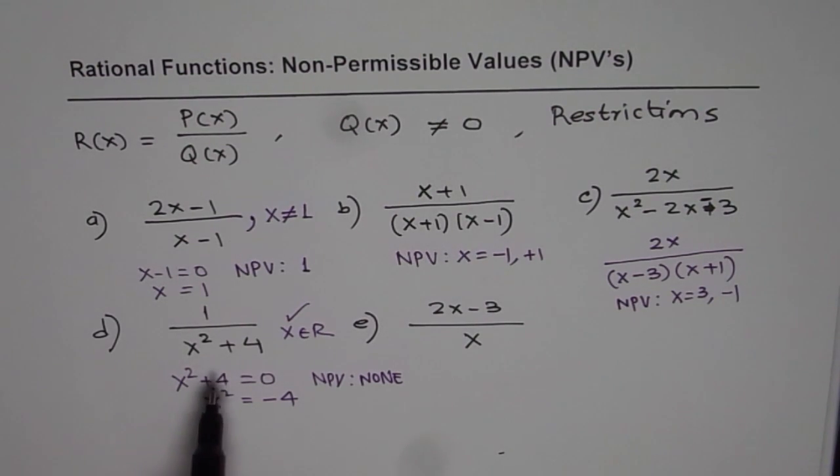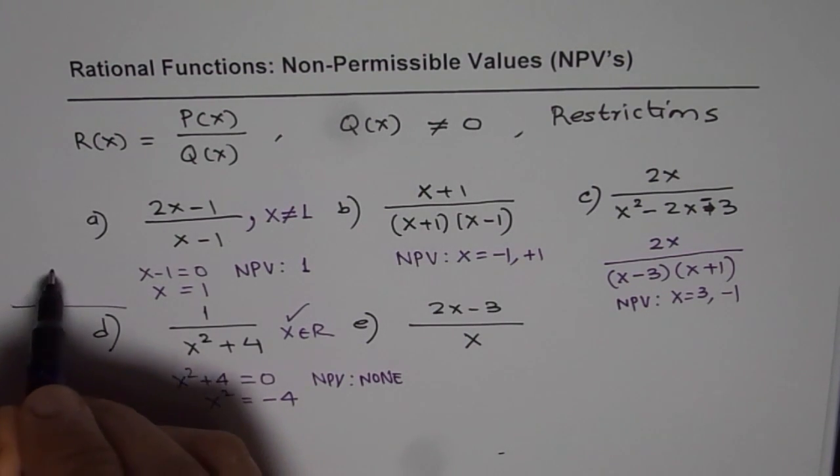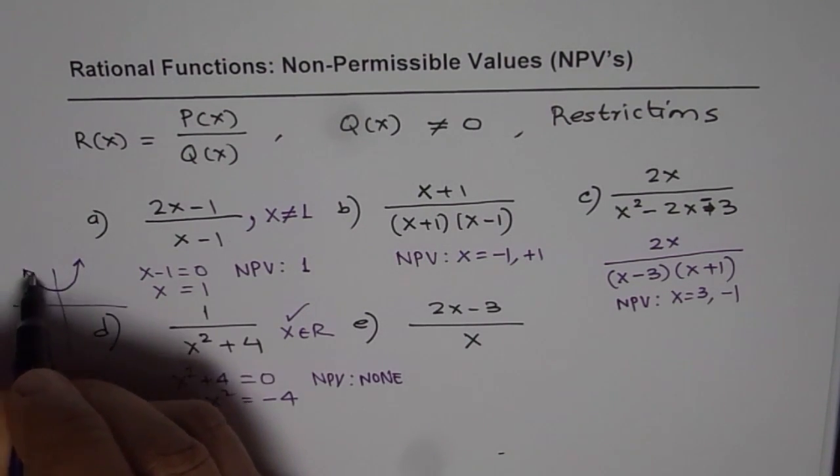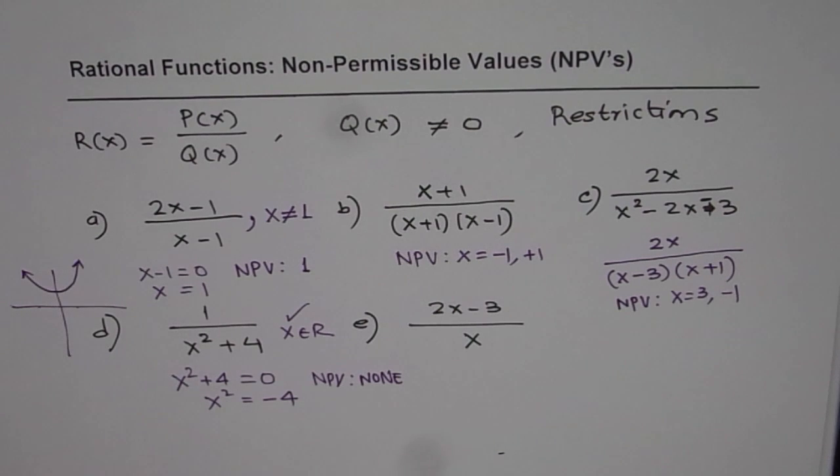That is important. You will note later that if I sketch x squared plus 4, the graph will be kind of like this. This graph does not have x intercepts, it is never 0. And that is the reason why this will have no restriction or it will not have any value which will not be permitted. So all values are permitted for this function.